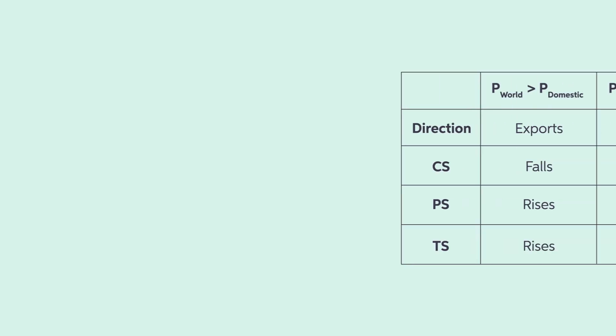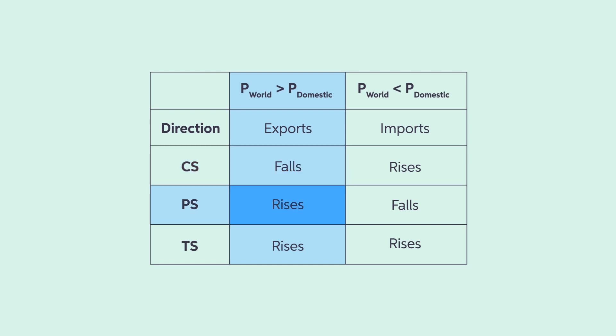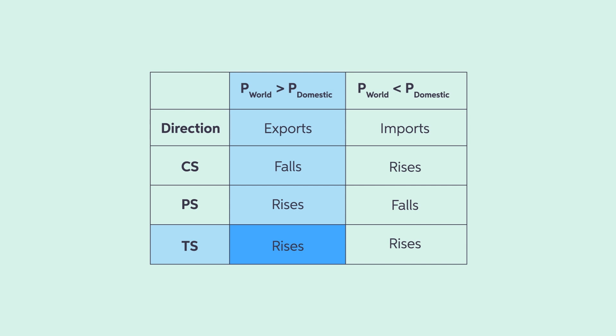First, let's summarize the overall trade outcomes of when a country is an exporter or importer of goods. When the world price is greater than the domestic price, the country is an exporter and the consumer surplus falls while the producer surplus rises. As a result, producers are better off, consumers are worse off, and the total surplus increases.